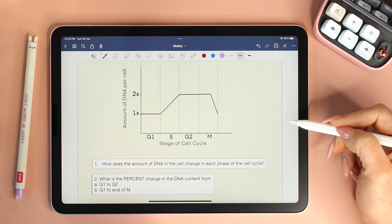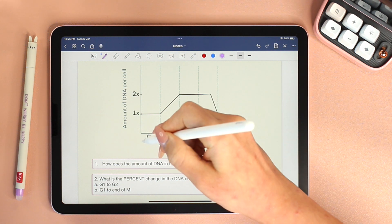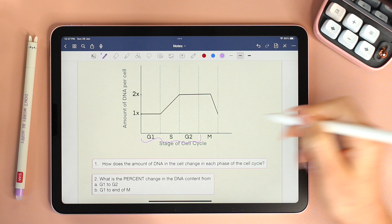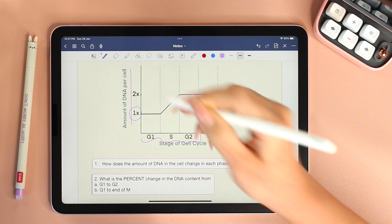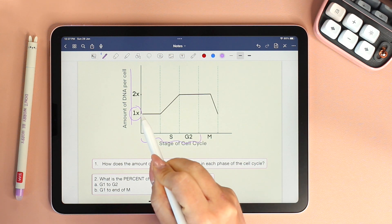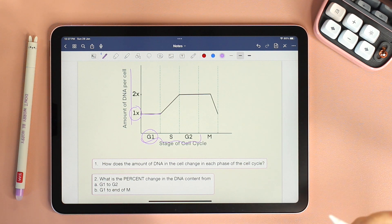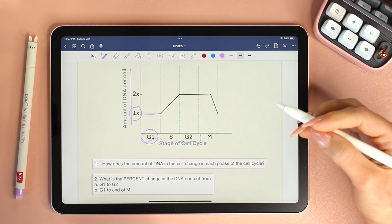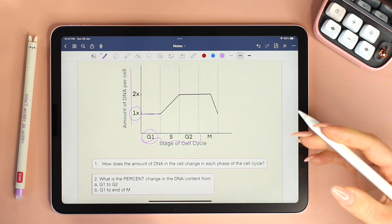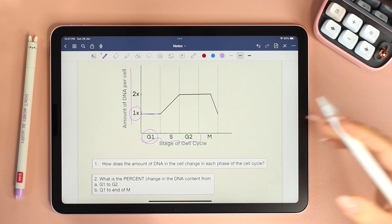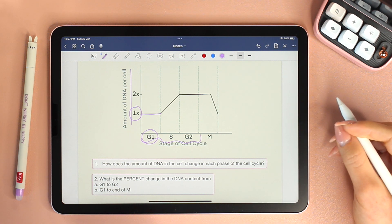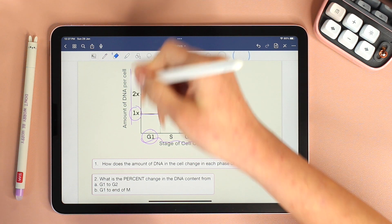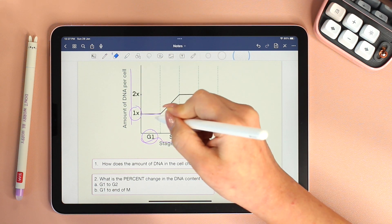Let's start with the phases of interphase: G1, S, and G2. In G1, the amount of DNA per cell is at 1x, and it stays at 1x all throughout G1, which makes sense, right? Because G1, or GAP1, is the phase where the cell is growing, it's working on its organelles and proteins, but there's no duplication, there's no replication of DNA. And that's why the amount of DNA stays constant at 1x.